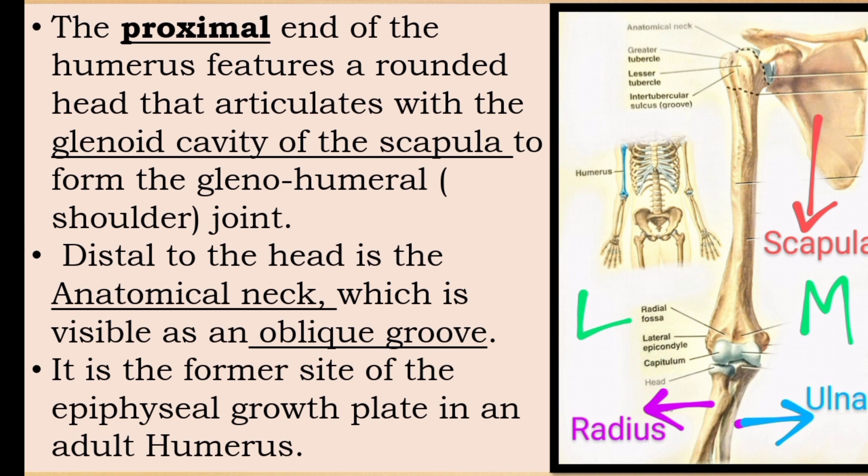The proximal end of the humerus features a rounded head that articulates with the glenoid cavity of the scapula to form the gleno-humeral joint. The head of the humerus articulates with the scapula's glenoid cavity — this is called the gleno-humeral joint.